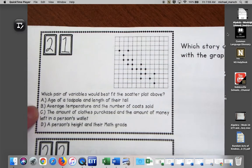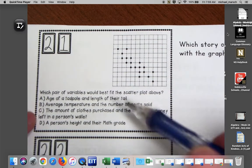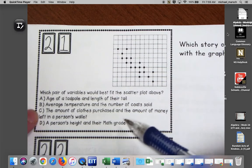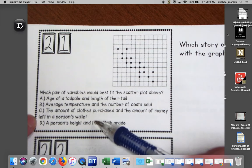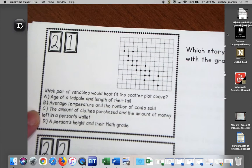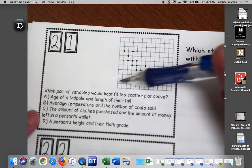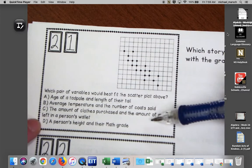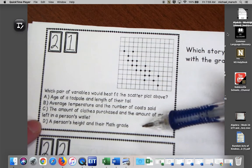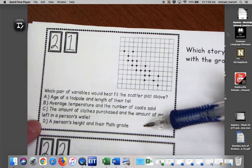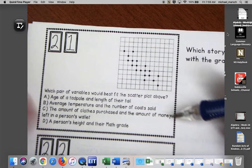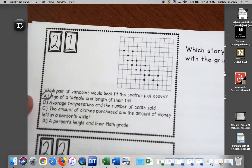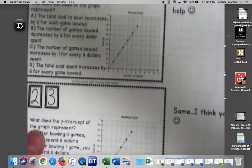The amount of clothes purchased and the amount of money left in a person's wallet. Well, you're going to have less money, but this would be less purchasing as well, so I don't think it's going to be C. A person's height and their math grade. Nope, that definitely does not have a relationship. I'm sorry, I hate to break it to you, tall people doesn't mean you're getting an A. Again, our answer is going to be A for 21.